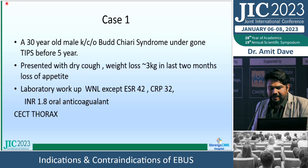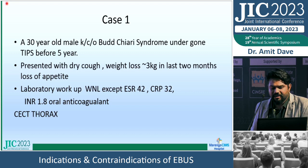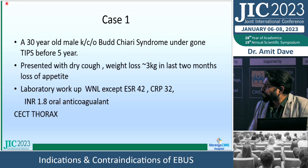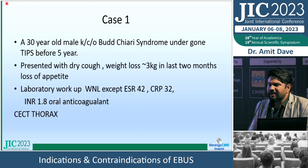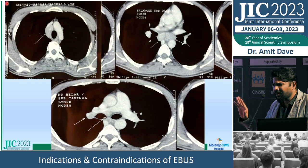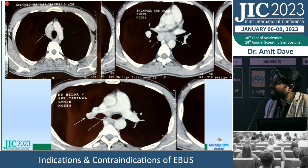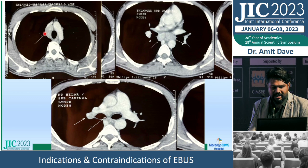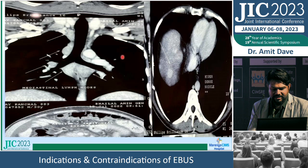Case 1: A young male with Budd-Chiari syndrome who underwent TIPS five years ago presented with dry cough and weight loss of 3 kg over two months, constitutional symptoms including loss of appetite. Laboratory workup was near-normal except slightly raised inflammatory markers. INR was 1.8 as he was on oral anticoagulants. CT thorax showed a large right paratracheal node and subcarinal nodes, also visible in the coronal section at the 4R and station 7 junction.